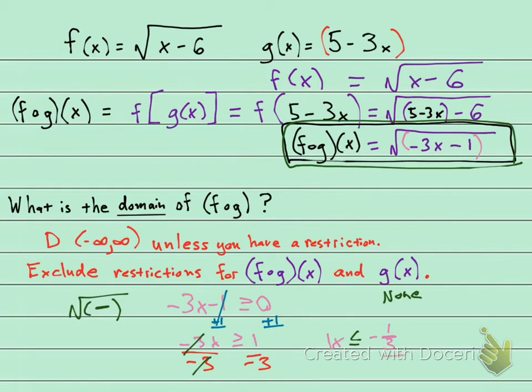So here is my domain restriction: x is going to be less than or equal to negative one-third. If I put that on a number line, it's going to look like this. Here is negative one-third.